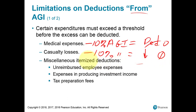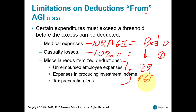Another group of deductions claimed on Schedule A are the so-called miscellaneous itemized deductions reported at the bottom of Schedule A. You take a subtotal of these items and then reduce them by 2% of the taxpayer's adjusted gross income. The remainder is what's deductible — and again, for a lot of people, this is zero.